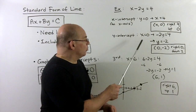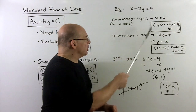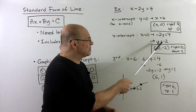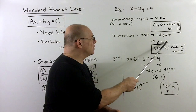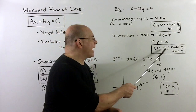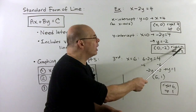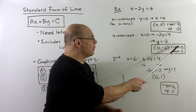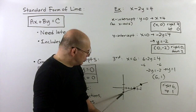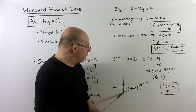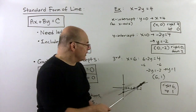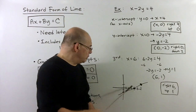For the y-intercept, set x equal to 0. That gives minus 2y equals 4. Divide both sides by minus 2, and we get y equals minus 2. So the point is (0, -2) — go right 0, down by 2. That point is on the y-axis. Connect the dots and that gives you the graph.